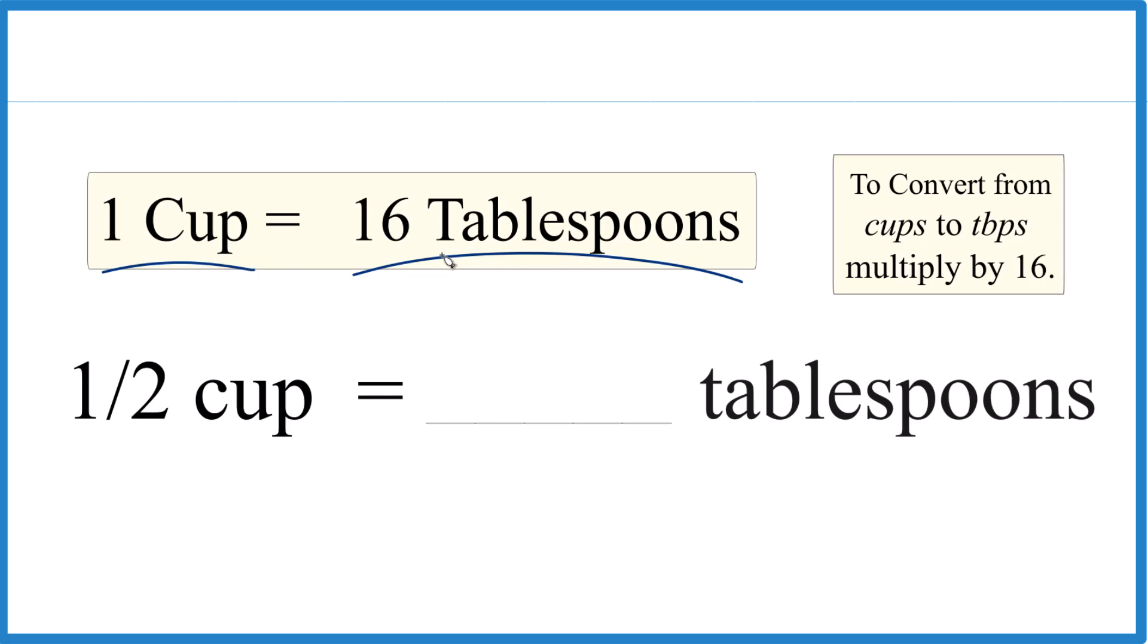So if one cup equals 16 tablespoons, half of a cup, that's going to equal half of 16. So we'd have eight tablespoons. And that's really kind of it.